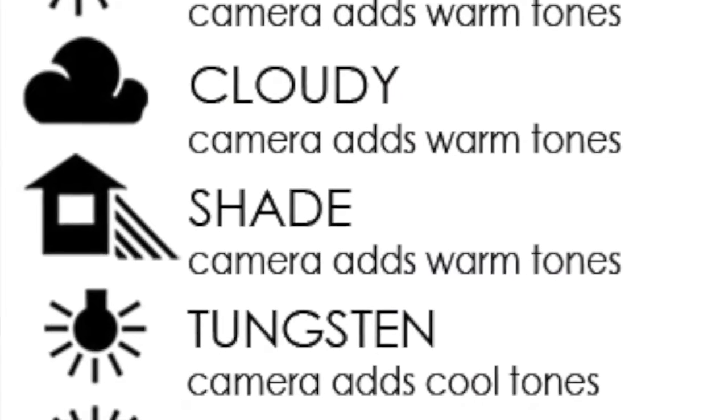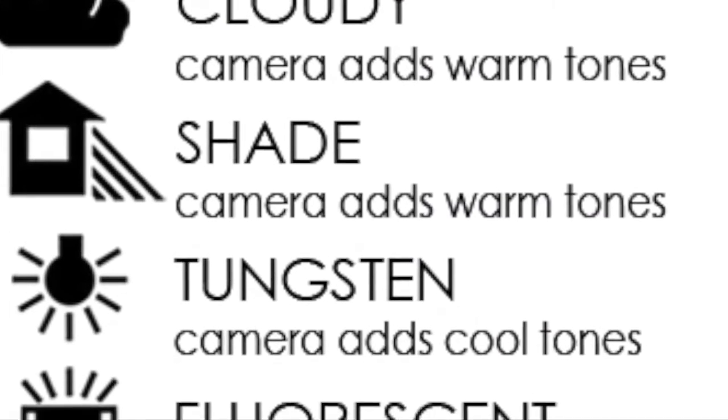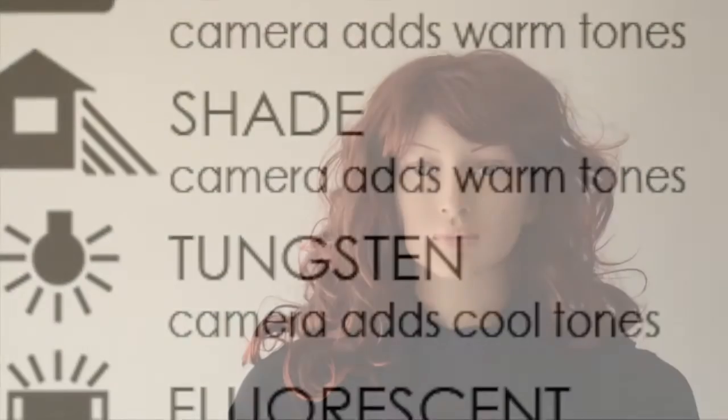Tungsten white balance is where the camera sees white as 3200 Kelvin. When the camera is set for tungsten white balance, you need to use tungsten lamps. If you use daylight or daylight-balanced lamps, there will be some blue cast over the picture.